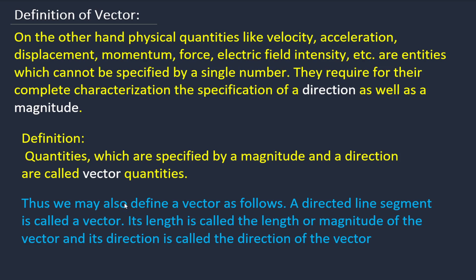On the other hand, some physical quantities like velocity, acceleration, displacement, momentum, and force cannot be defined with a single number. When a particle is moving, two things come into play: how much displacement it makes and what is the direction. Force, momentum, electric field intensity — each requires a direction. So with a specific magnitude, we also need direction, and whenever we need both magnitude and direction, that quantity is called a vector.